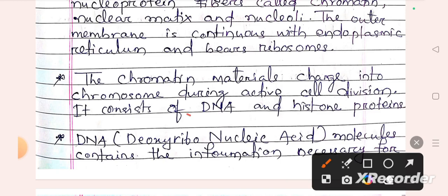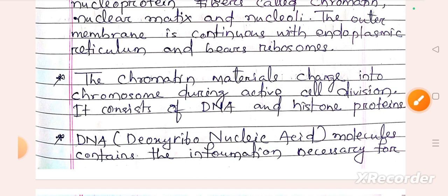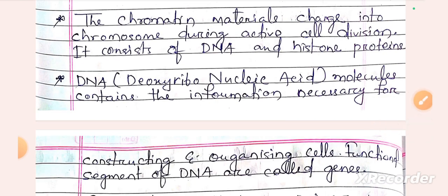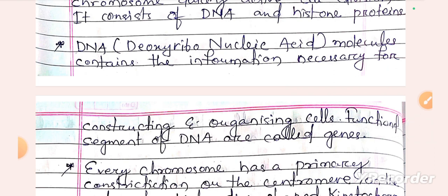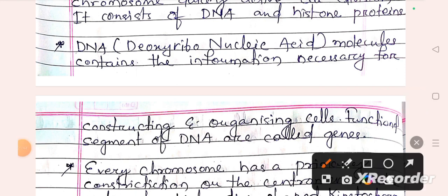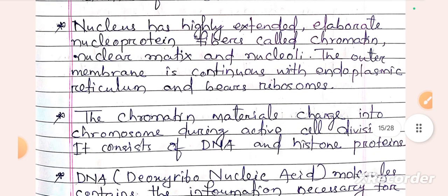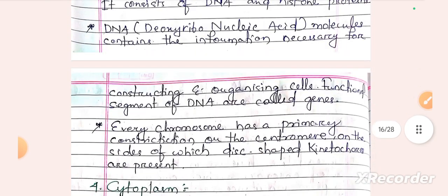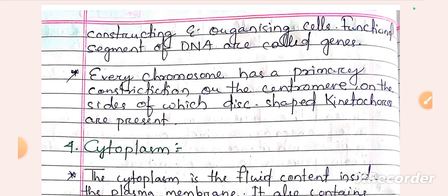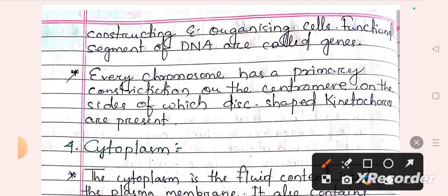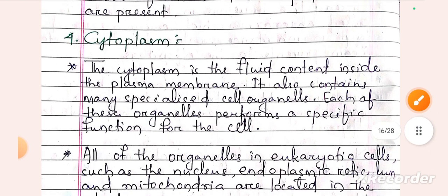Chromosomes consist of DNA. The functional segment of DNA is called a gene — genes are the DNA functional segments. Every chromosome has a primary constriction called the centromere, on the sides of which disc-shaped kinetochores are present. Then we look at cytoplasm.